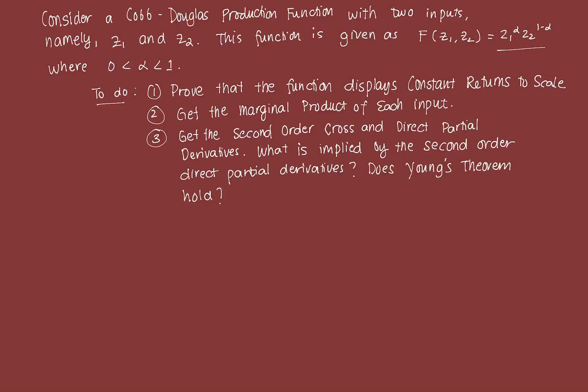We're going to do this manually first, and then I'll show you the solutions in Mathematica. First, we're going to prove that the function displays constant returns to scale. What it means by constant returns to scale is that if you double the amount of Z1 and Z2, it would mean that the total output would also double — the output increases in the same proportion as the inputs.